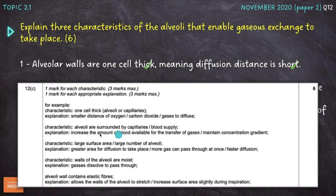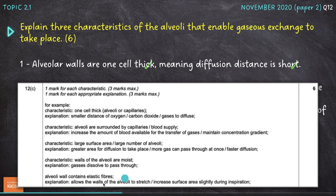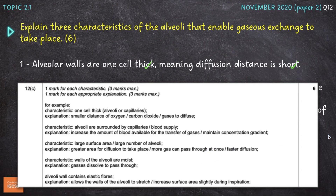We could also have talked about the large surface area of the alveoli, or the huge number of alveoli, which provides a greater area for diffusion — more gas can pass through at once, faster diffusion. We could also have mentioned the elastic fibres within the alveolar walls, which allows them to stretch, increasing the surface area slightly during inspiration. Any three of these characteristics appropriately explained would have got us the six marks.